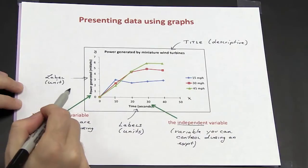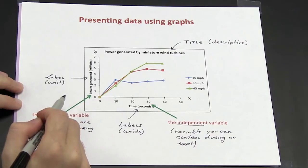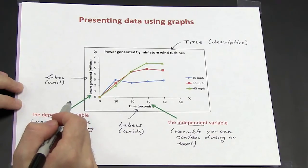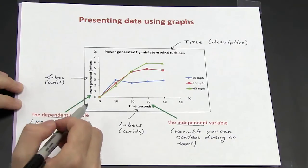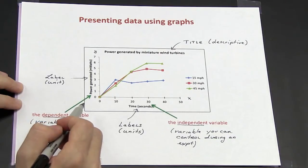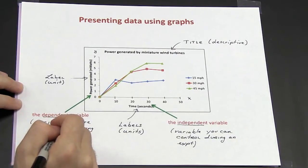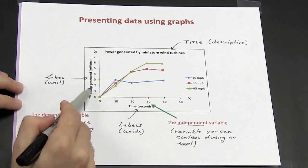So in this graph I am looking at the power generated by a wind turbine. Since I'm measuring the power, that is the dependent variable and goes on the y-axis.